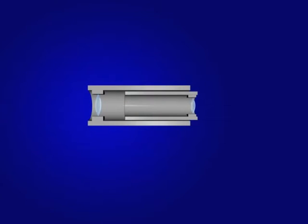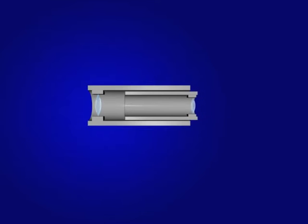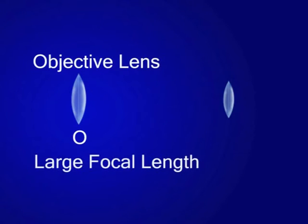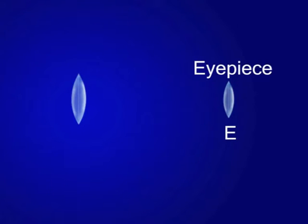What you can see here is an astronomical telescope. It consists of two lenses or lens systems. One of them is the objective lens O, which is of large focal length and large aperture, and the eyepiece E.